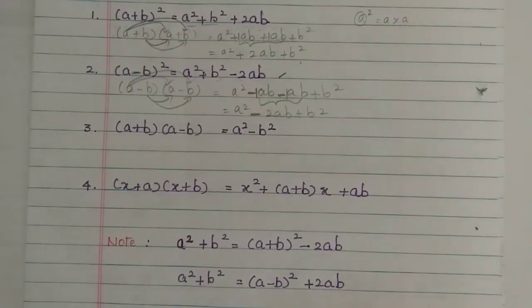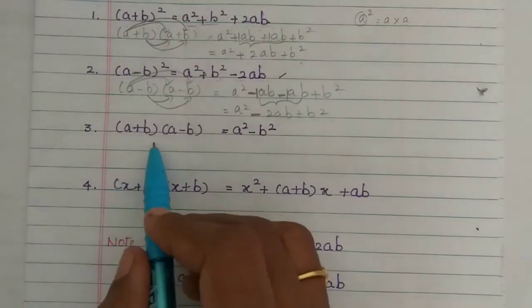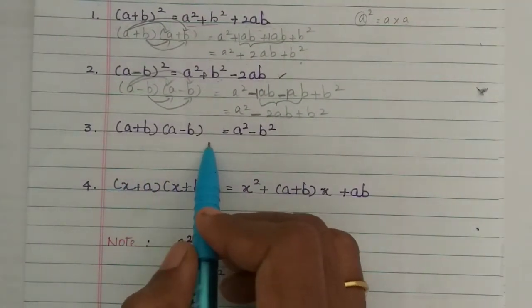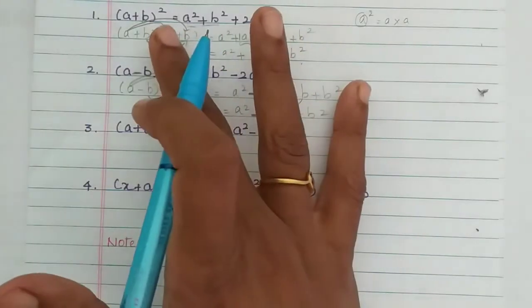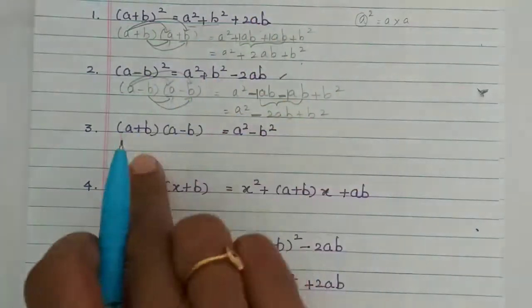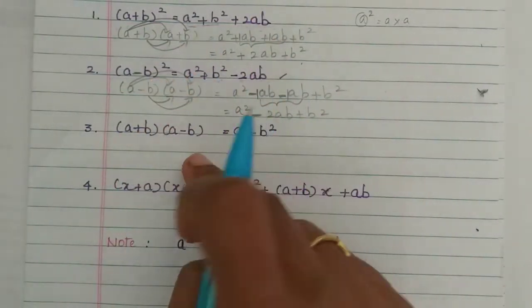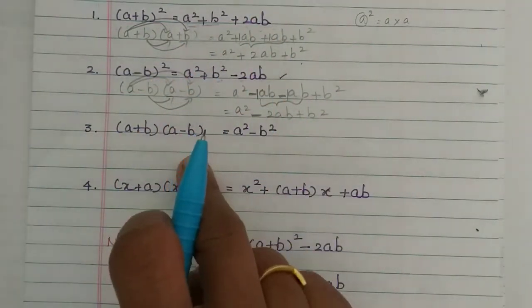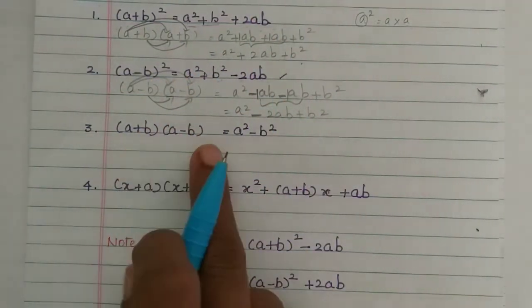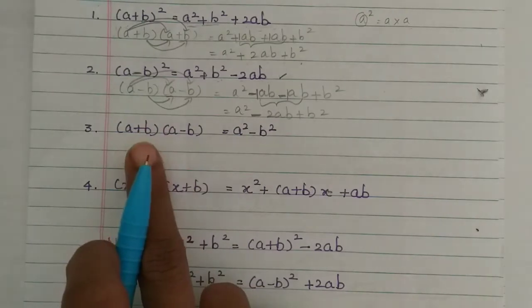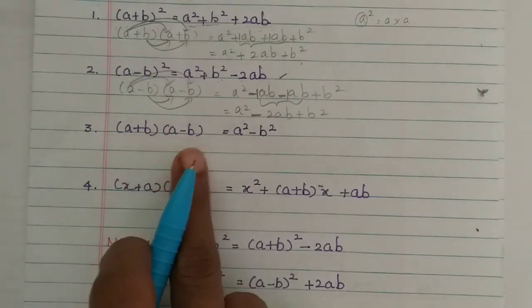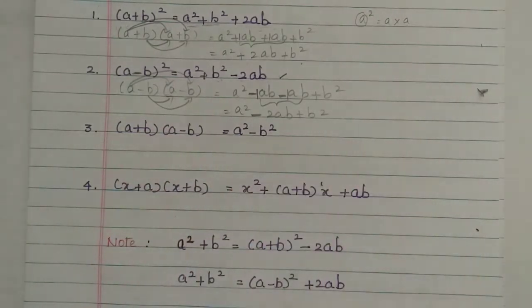Now the third formula: a plus b into a minus b. So we combine the first formula's a plus b and the second formula's a minus b. We multiply this out and get: a squared minus b squared.